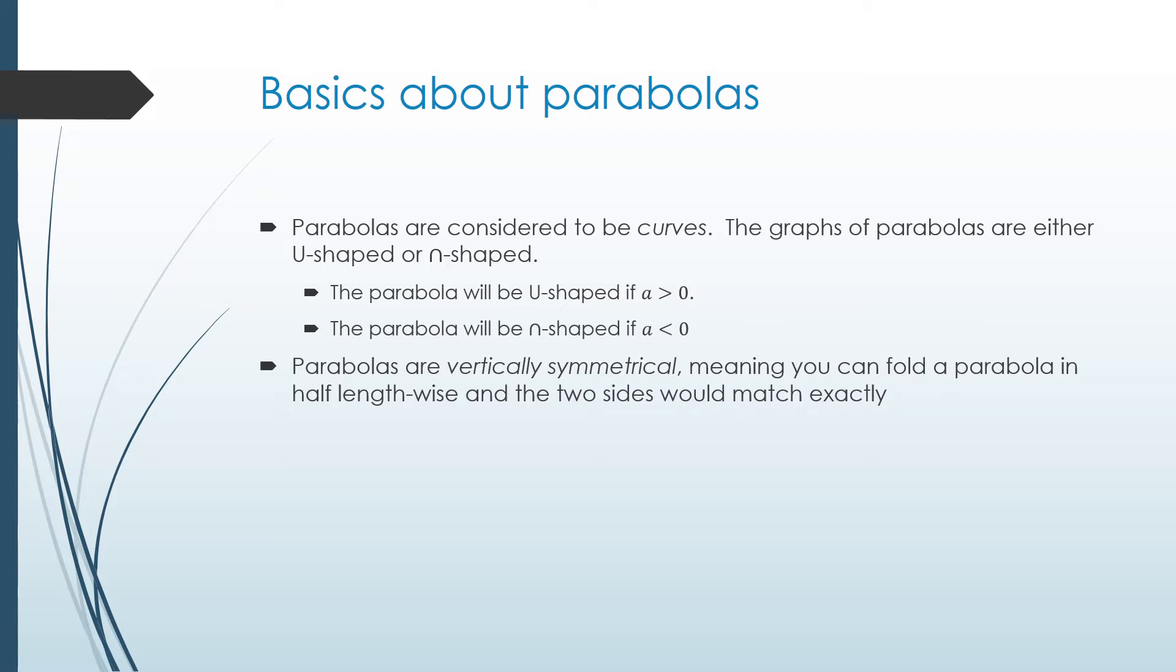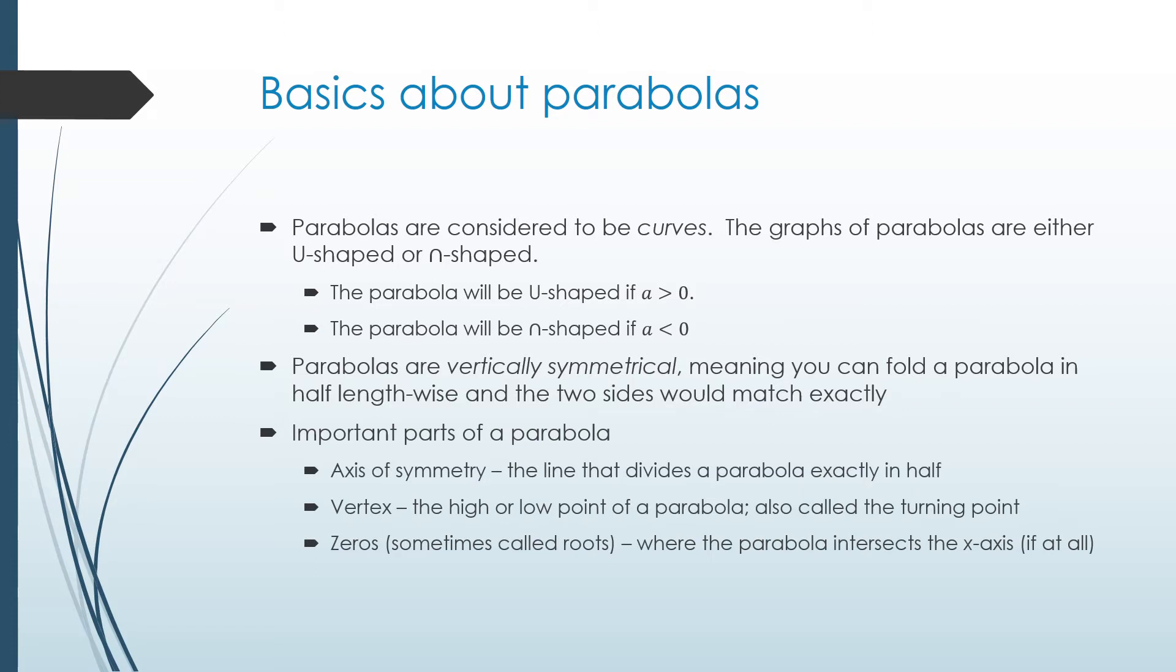Parabolas are vertically symmetrical. That means I can draw a line down the middle vertically and I can cut the parabola directly in half, and the sides would match each other exactly. There are three major parts to any parabola: the axis of symmetry is the line that divides the parabola exactly in half. The vertex is the high point or the low point on the parabola, also called the turning point. Finally, zeros or roots are where the parabola intersects the x-axis, if it intersects the x-axis at all.